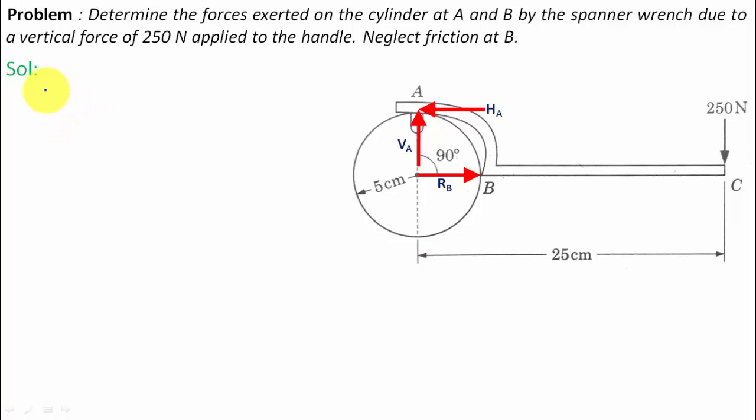We're going to use our equations of equilibrium since everything stays in equilibrium. I'm going to use the equation moment about a certain point equals zero. The benefit of using this point is that HA and VA both won't come into the picture, so I'll be left with only two forces: RB and the 250 Newton force. You have one equation and one unknown RB, which can be calculated.